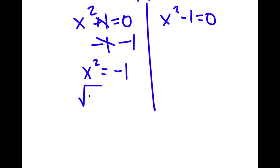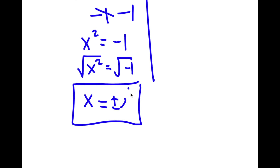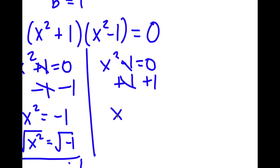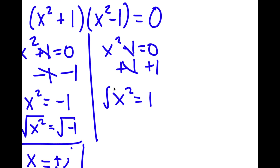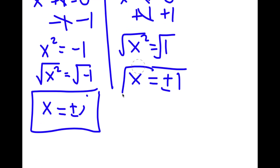If I take the square root on both sides, the square root of x squared is x, and the square root of negative 1 is i. So I have positive and negative i. For x squared minus 1 equals 0, I add 1 on both sides and get x squared equal to 1. Taking the square root gives x equals positive or negative 1. That's 2 more solutions, so these are my 4 solutions to this problem.